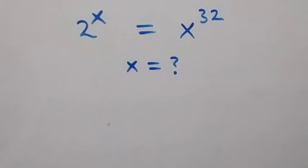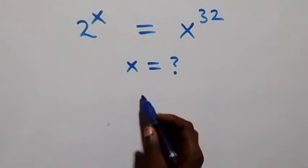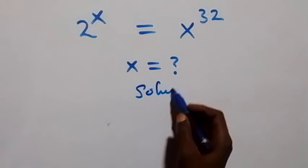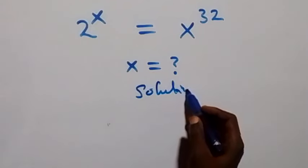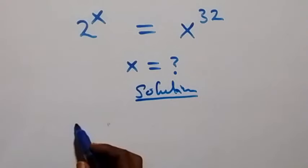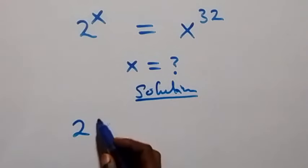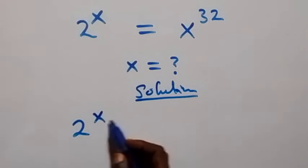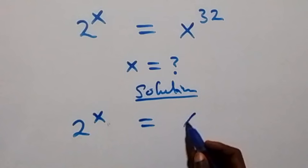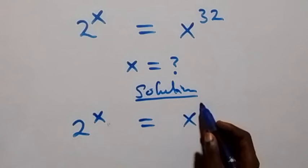Hello, you're welcome. Here's how to solve this nice exponential problem. From what we are given: 2 raised to power x equals x raised to power 32.